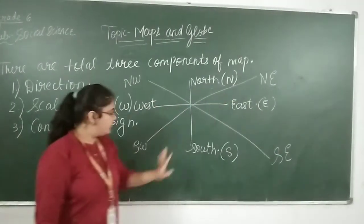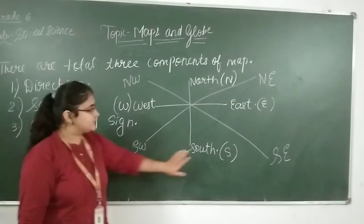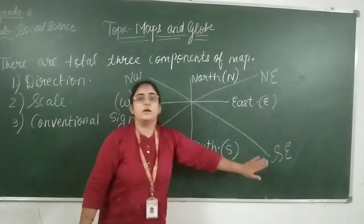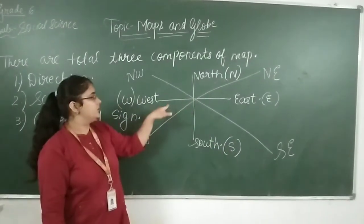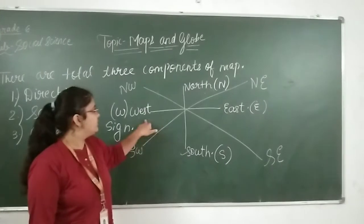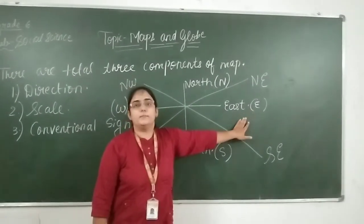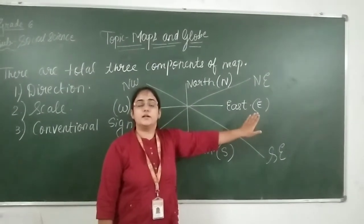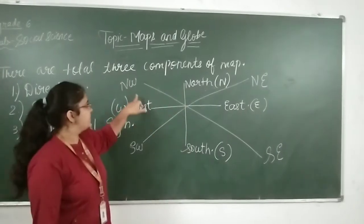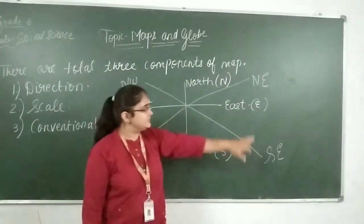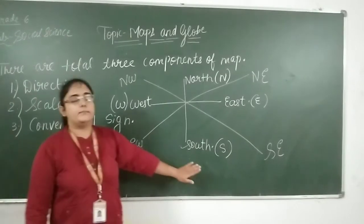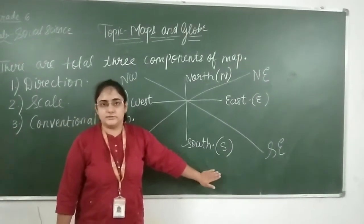The four main directions — north, south, west, and east — are termed as cardinal directions. The other four directions, that is north-west, north-east, south-east, and south-west, are termed as intermediate directions.